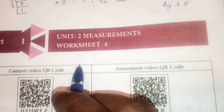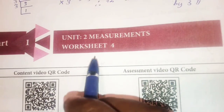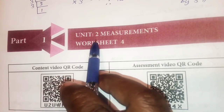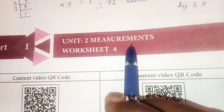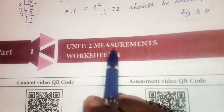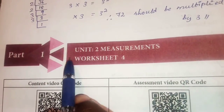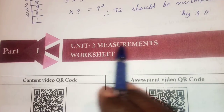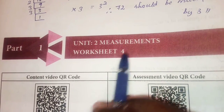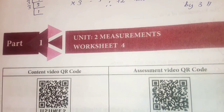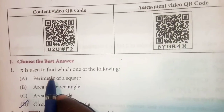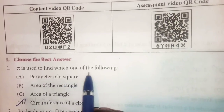Welcome to online class. Unit 2 - Measurements, Worksheet 4. Part 1, first question: Choose the best answer. Pi is used to find which one of the following?